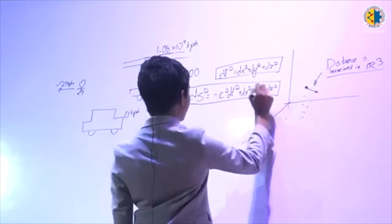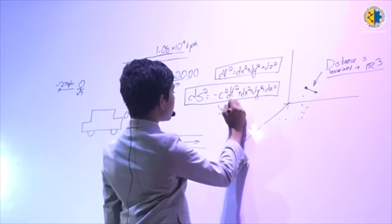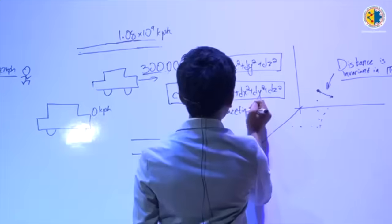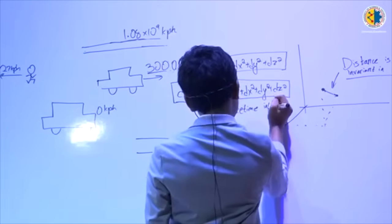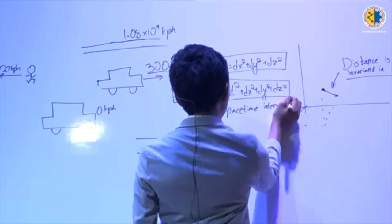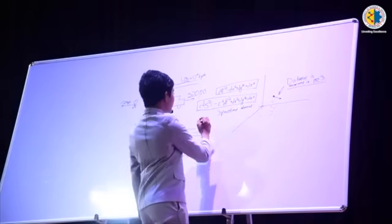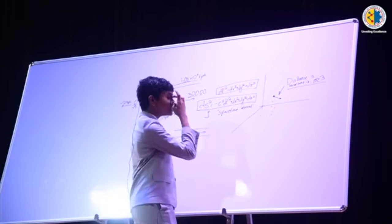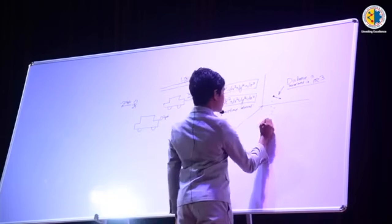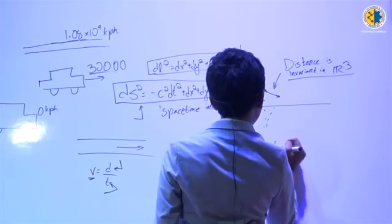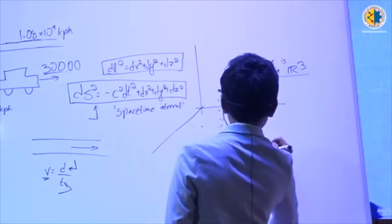This is what we call the space-time interval. So, essentially, transformations in relativistic space are supposed to make this stay constant. And so, transformations that keep this constant are known as Lorentz transformations.